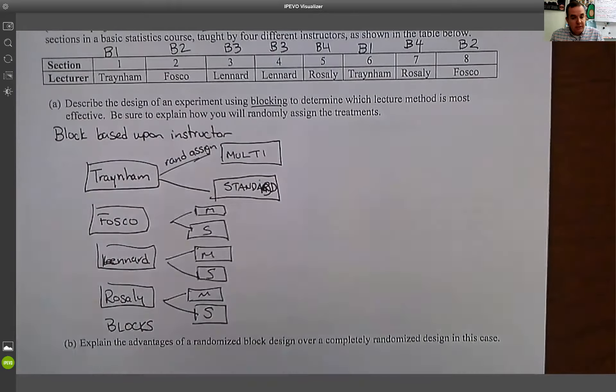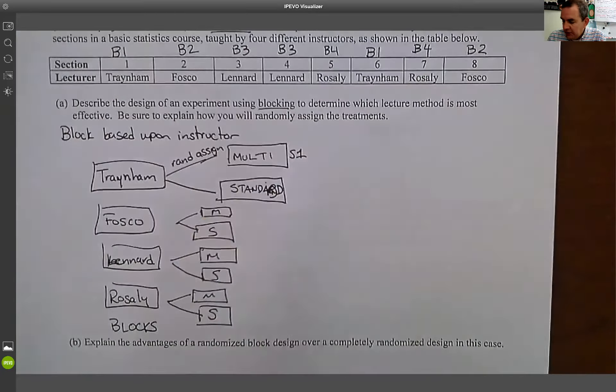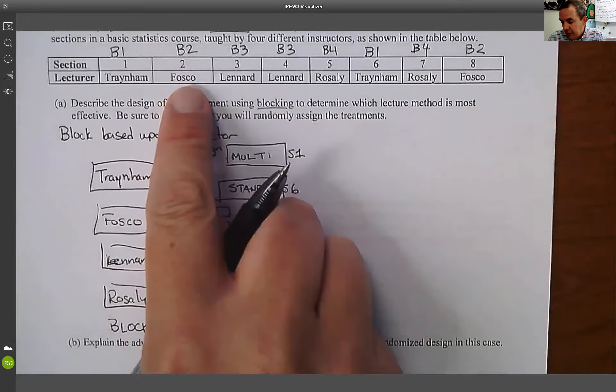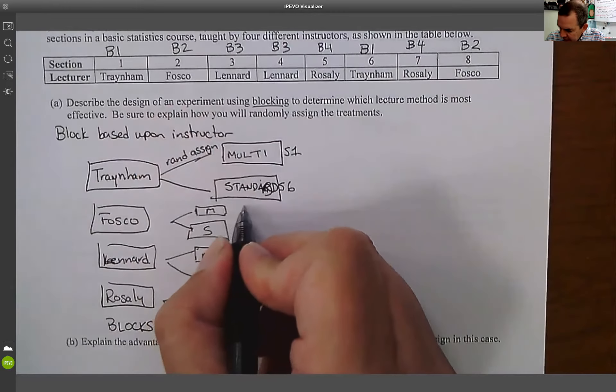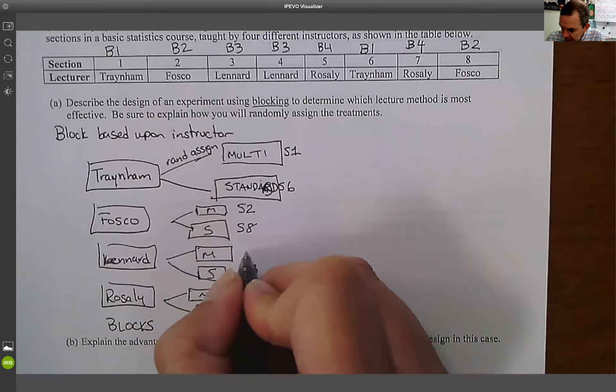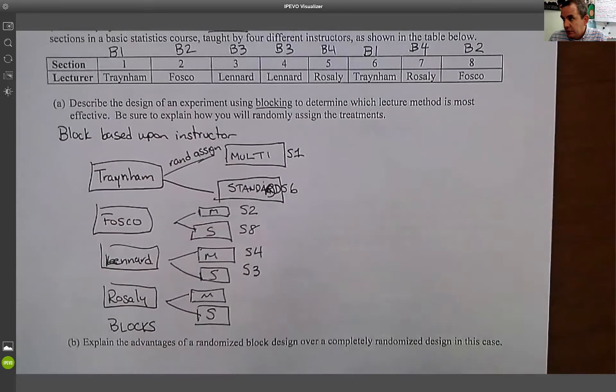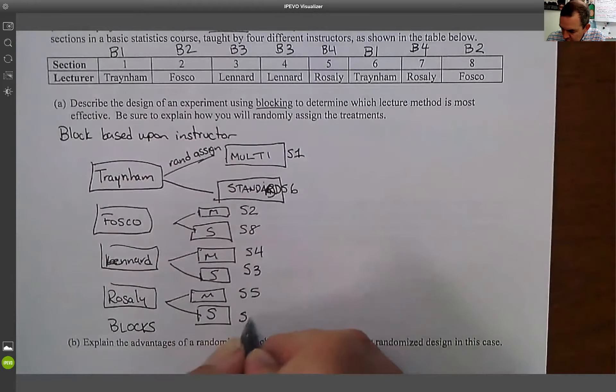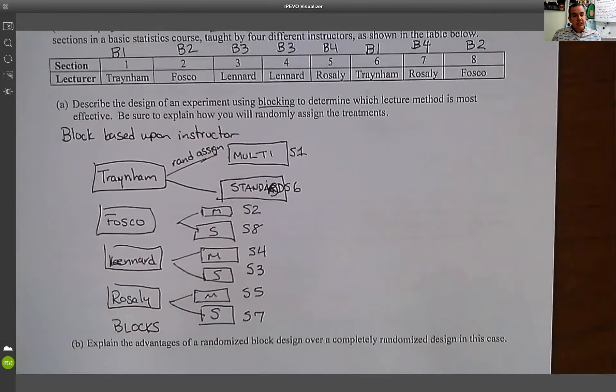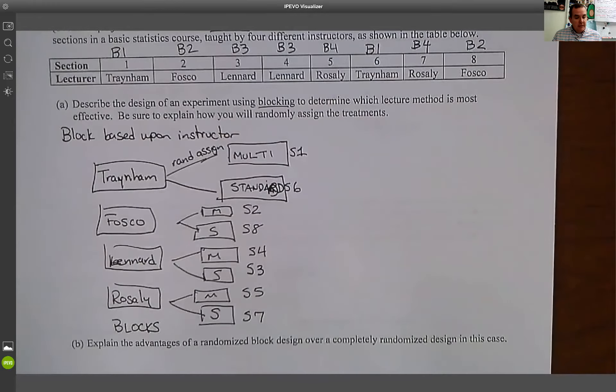So now the way I would do that is, for example, flip a coin. Heads, it's going to be multimedia. Tails, it would be standard. So heads, we'll look at this and we'll say that we have our two sections. So we're going to say we're going to start with Traynum, section one. Flip the coin. Heads. Okay. They get, section one is going to get multimedia, which means automatically that section six is going to get standard. Then I repeat that process for Fosco, do the flipping of the coin. And when I go ahead and I flip that coin, let's say Fosco goes ahead and gets section two as multimedia and section eight as standard. I flip the coin again and Lennard gets section three as standard and section four as multimedia. And then, last but not least, when Rosalie does it, I get section five and section seven. But I do it randomly. It has to be random. I can't just pick. I flip a coin. So now what's happened is each teacher is teaching each individual style.